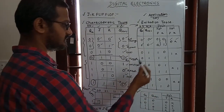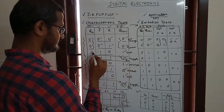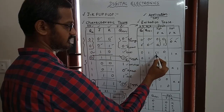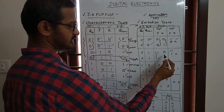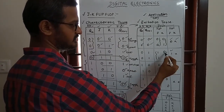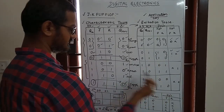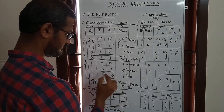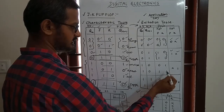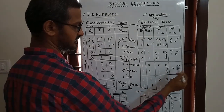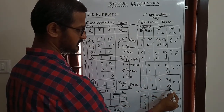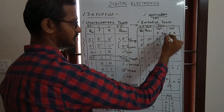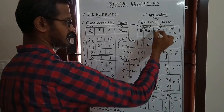Continuing the excitation table: when present state is 1 and next state is 0, J=x and K=1. When present state is 1 and next state is 1, J=x and K=0. So the full excitation table entries for J and K use don't care (x) conditions where the input doesn't affect the desired transition.